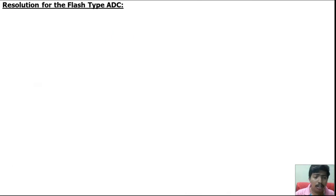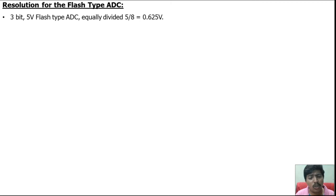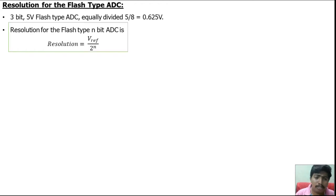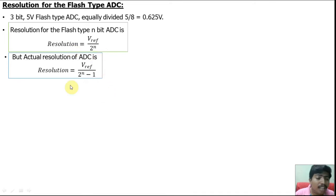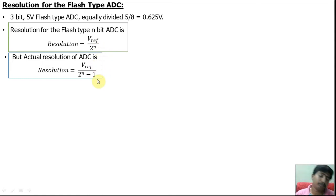What is the resolution of flash type ADC? For a 3-bit, 5 volt flash ADC, it is equally divided by 5/8 = 0.625 volt. The resolution for the flash type ADC is V_reference divided by 2^N. However, the actual resolution for any ADC is V_reference divided by (2^N − 1). The flash type ADC uses V_ref / 2^N because it is very difficult to design to achieve the actual resolution. Do not confuse these two.